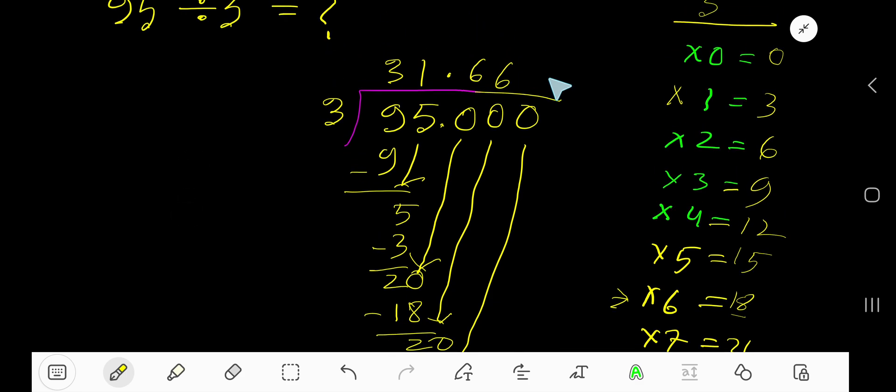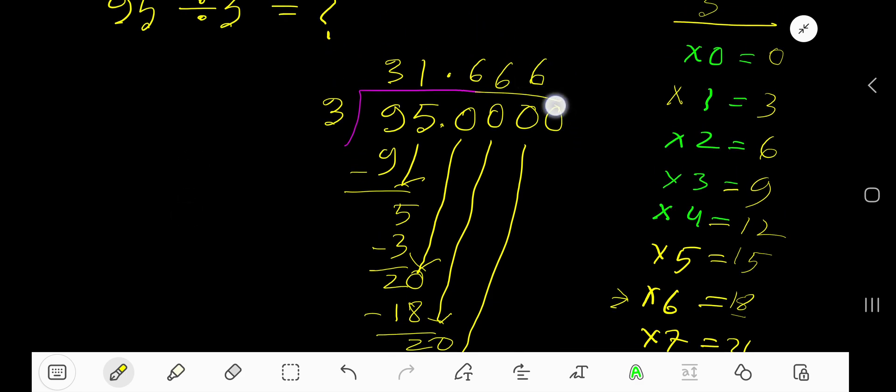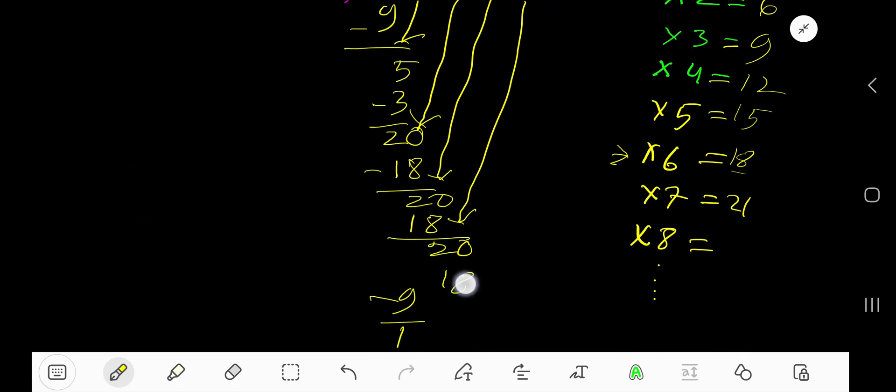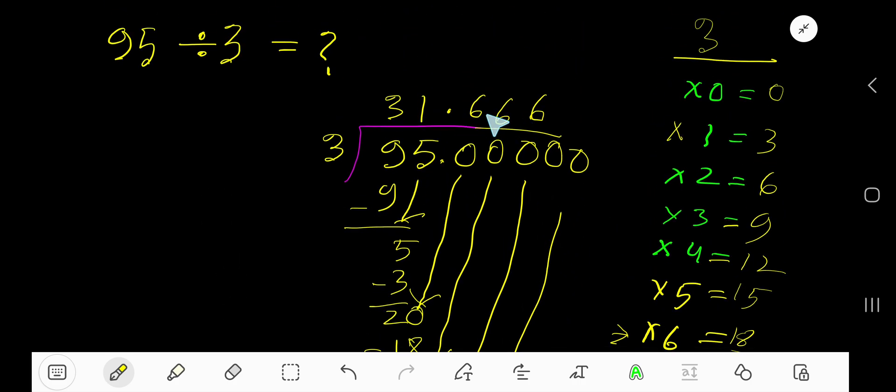3 goes into 20. Again, 6 times. So we can take another. 6 times 3, 18. Subtract 2.